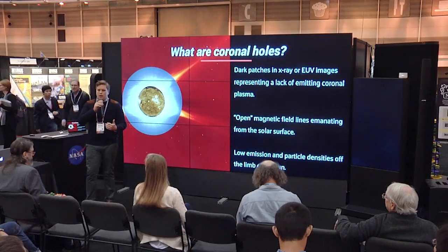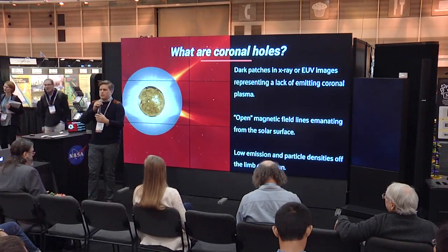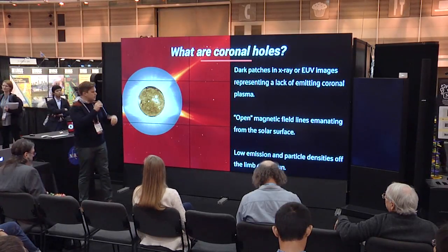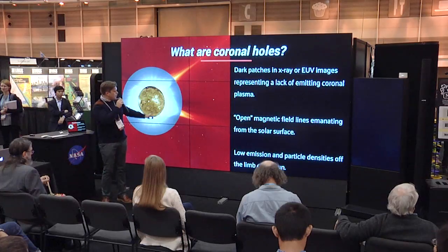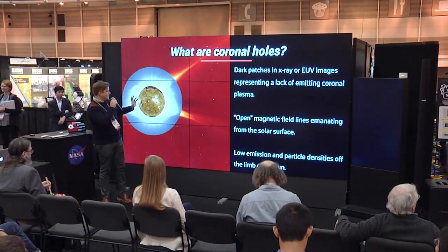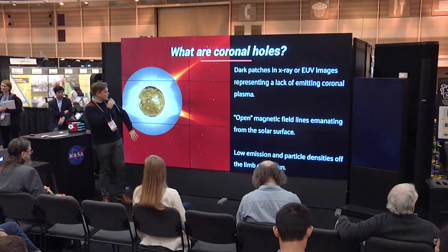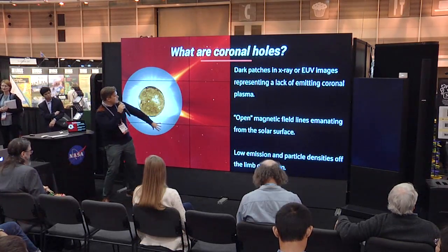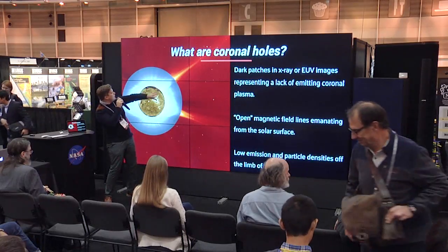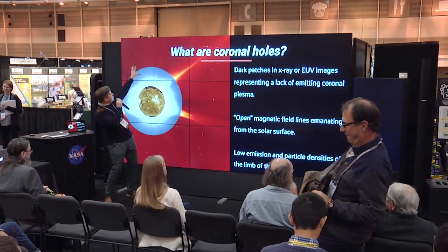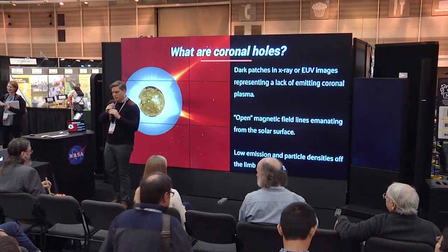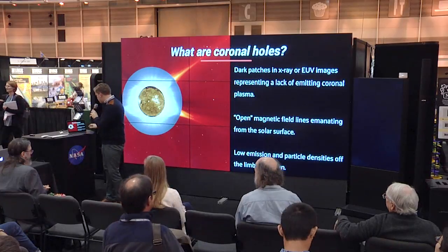Coronal holes are also defined by lower particle densities outside and far off the surface of the Sun into the corona. As you can see in this view of the Sun, up at the top there's very little light coming out — that's really the lower emission.